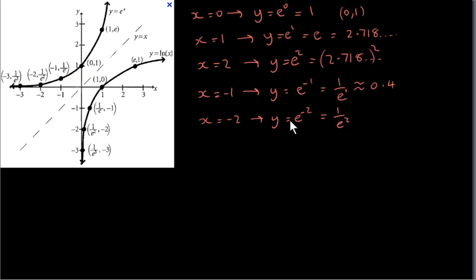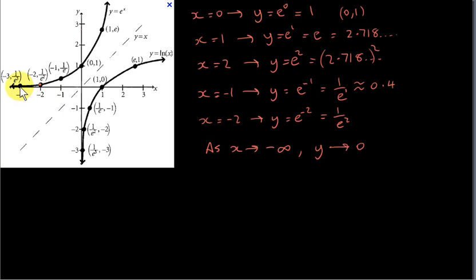If x equals minus 2, we have y equals e to the power of minus 2, which is 1 over e squared, which is even smaller than 0.4. So what's happening is the graph of y equals e to the power of x is approaching the x-axis as x tends towards negative infinity, but never crosses it. The y values are getting smaller and smaller as x becomes more and more negative. So the x-axis is an asymptote for the graph of y equals e to the power of x.